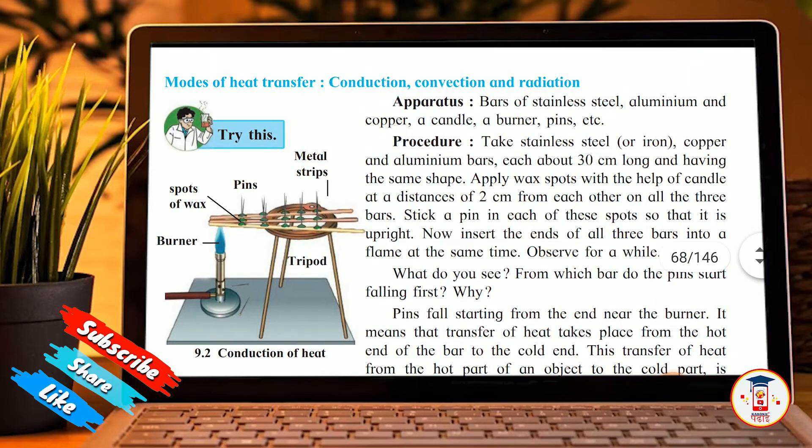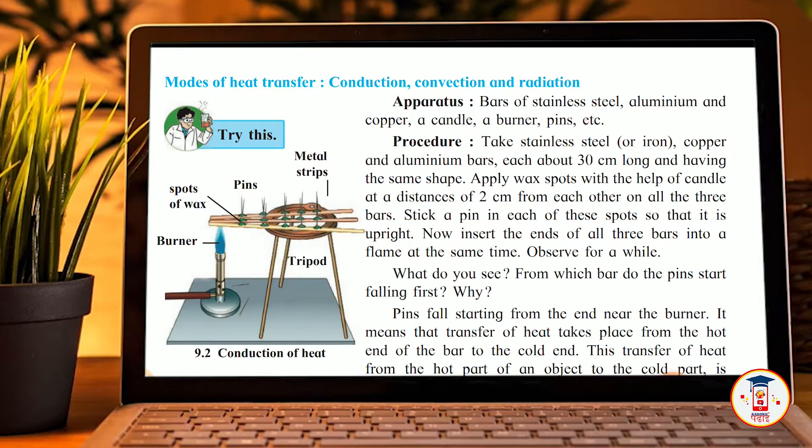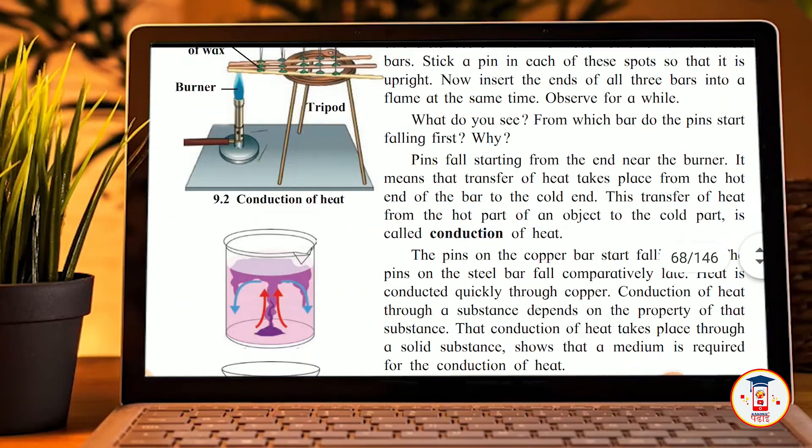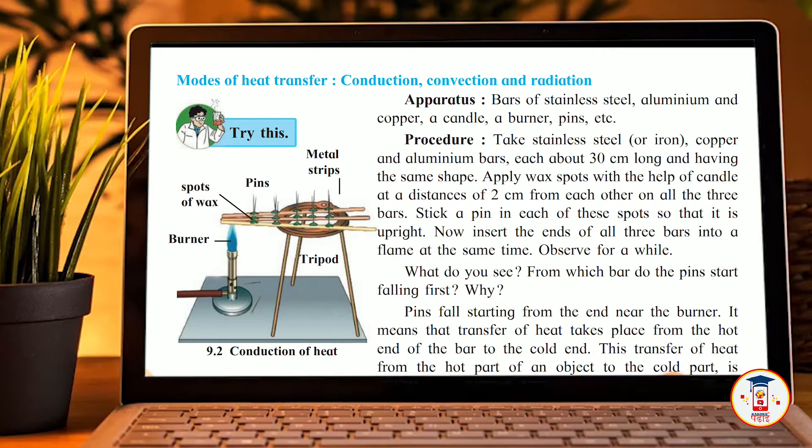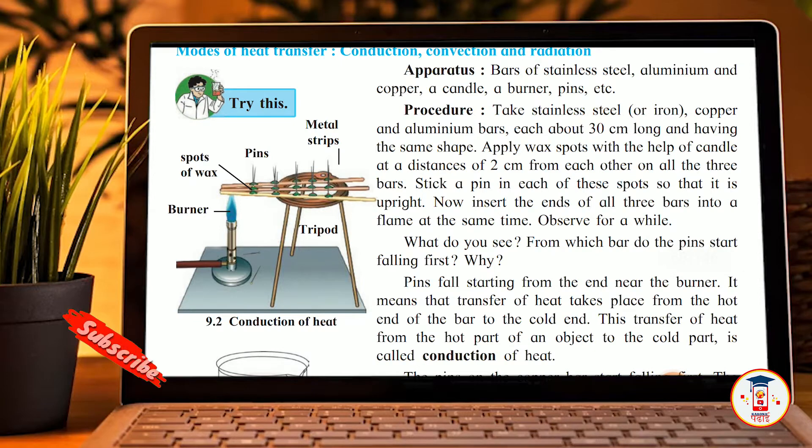Now we are looking at the procedure to complete this experiment. First, we have experiment 9.2, the conduction of heat. This experiment uses bars of stainless steel, iron, copper, and aluminum, each about 30 cm long, having the same shape. Apply wax spots with the help of a candle at a distance of 2 cm from each other on all three bars. Stick a pin on each spot so that it is upright.